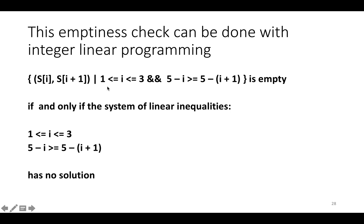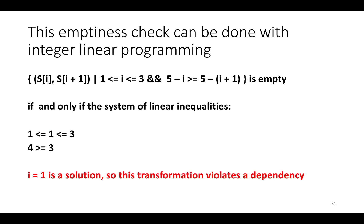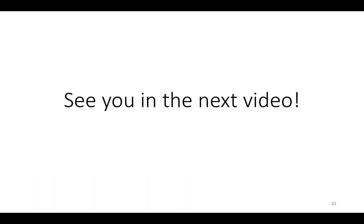This check can be done with something called integer linear programming. This set is empty if and only if the system of linear inequalities has no solution — i is between one and three, and five minus i is greater than or equal to five minus i plus one. If we substitute in one, we see that one is between one and three, which is true, and four is greater than or equal to three, which is also true. This means at least one solution exists for i equals one, which was the violated dependency we looked at in the last video. So this transformation actually violates a data dependency in the program, and therefore it is not legal. In the next video, I'll talk more about formalizing this process of constructing sets of dependencies and checking whether or not they're empty using tools from mathematical software.